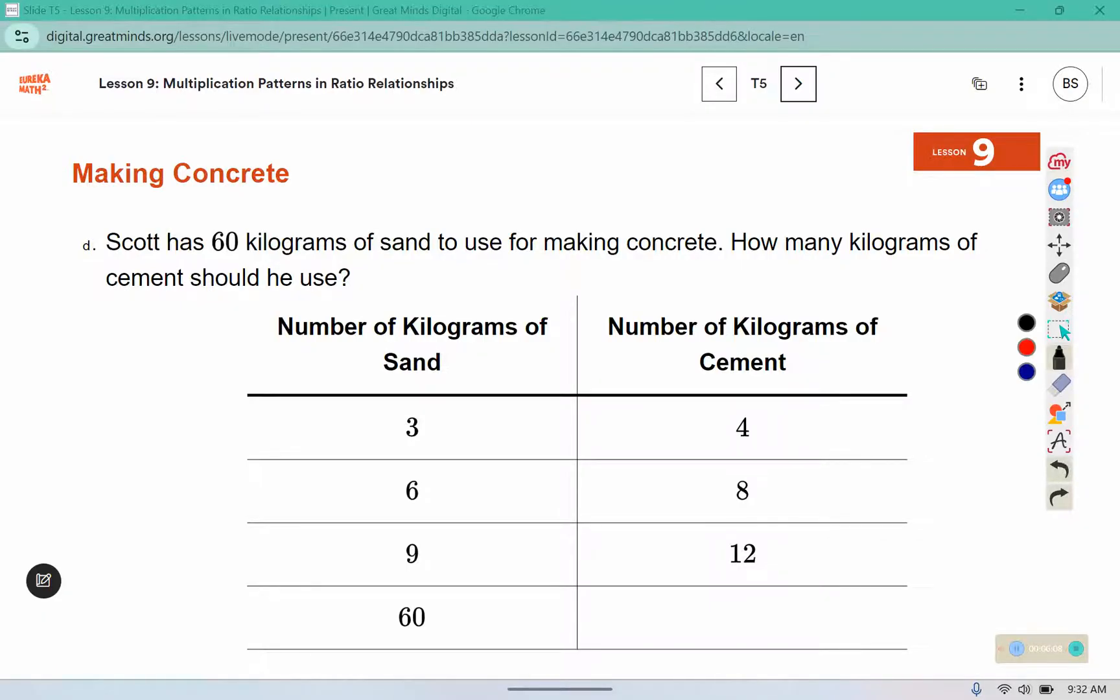But if we use a multiplication pattern, we can get there a whole lot faster. So I notice that these two have a multiplication piece that I could use. Because 6 times 10 would be 60.